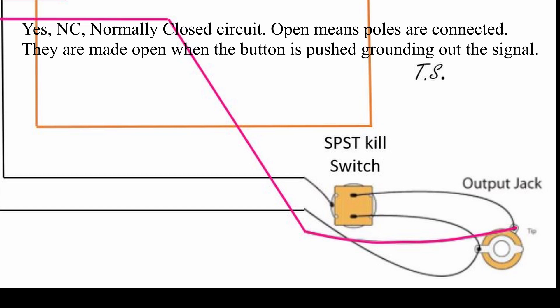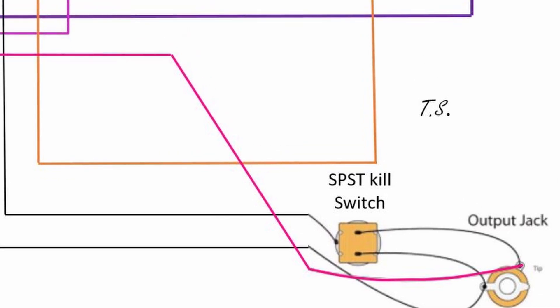So basically, the ground and the signal aren't connected, but then the switch is closed. Normally closed, which is the other kind, when you push the button in, which connects these two wires, essentially grounding out the signal, creating a kill switch.